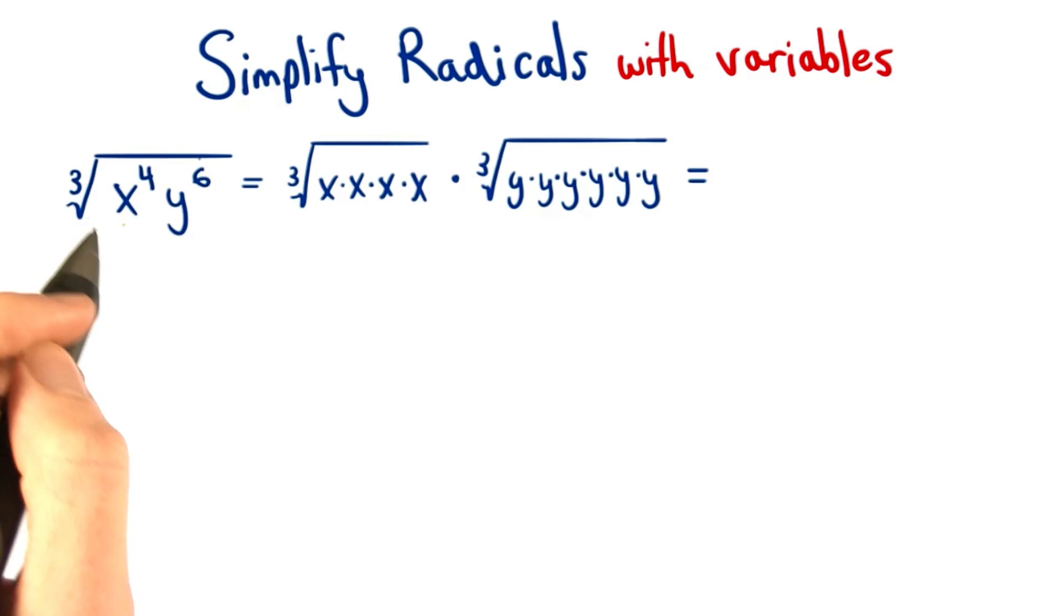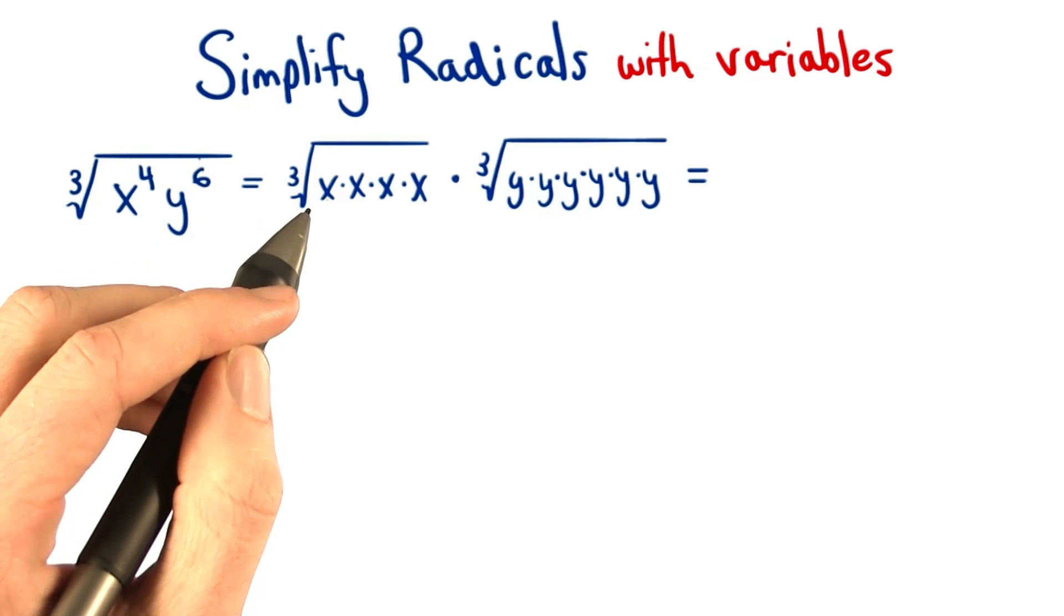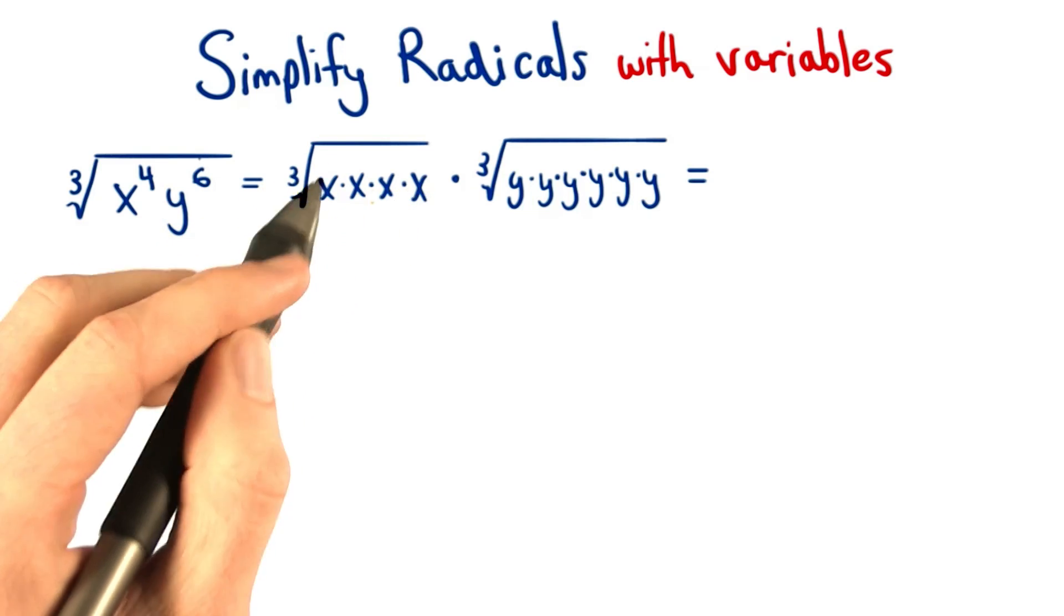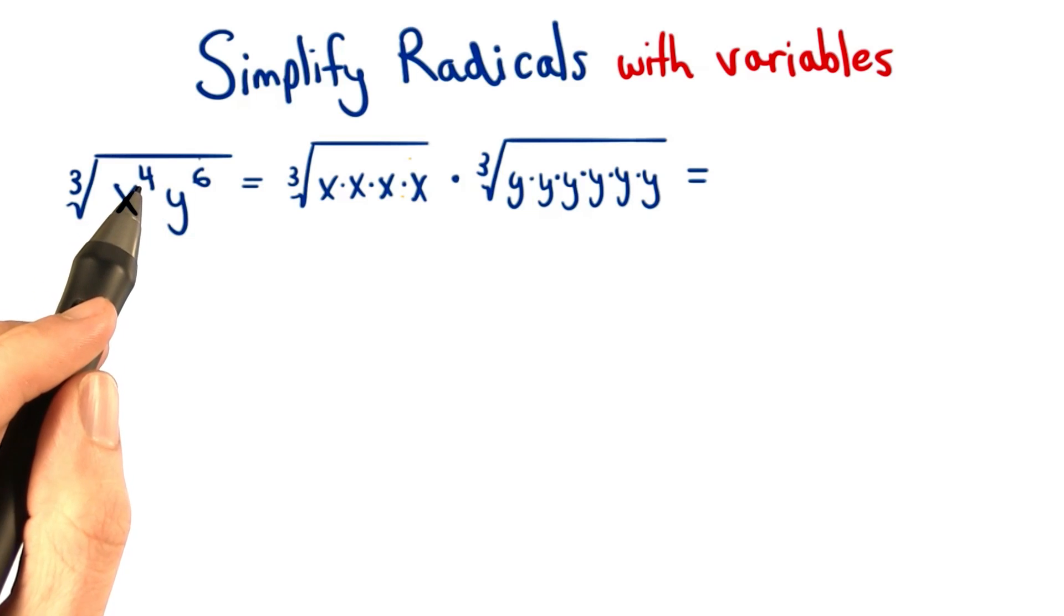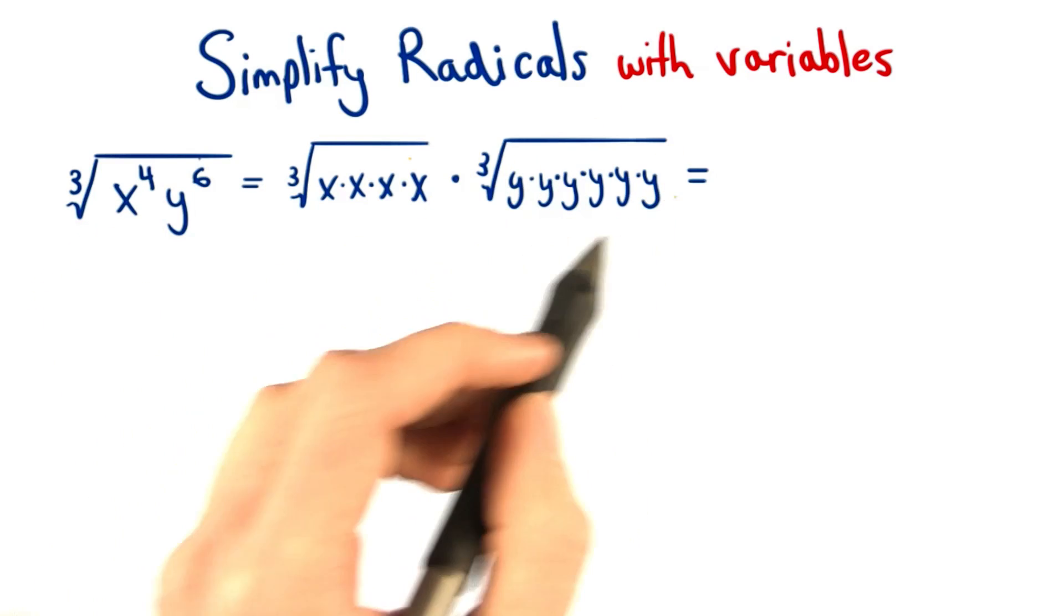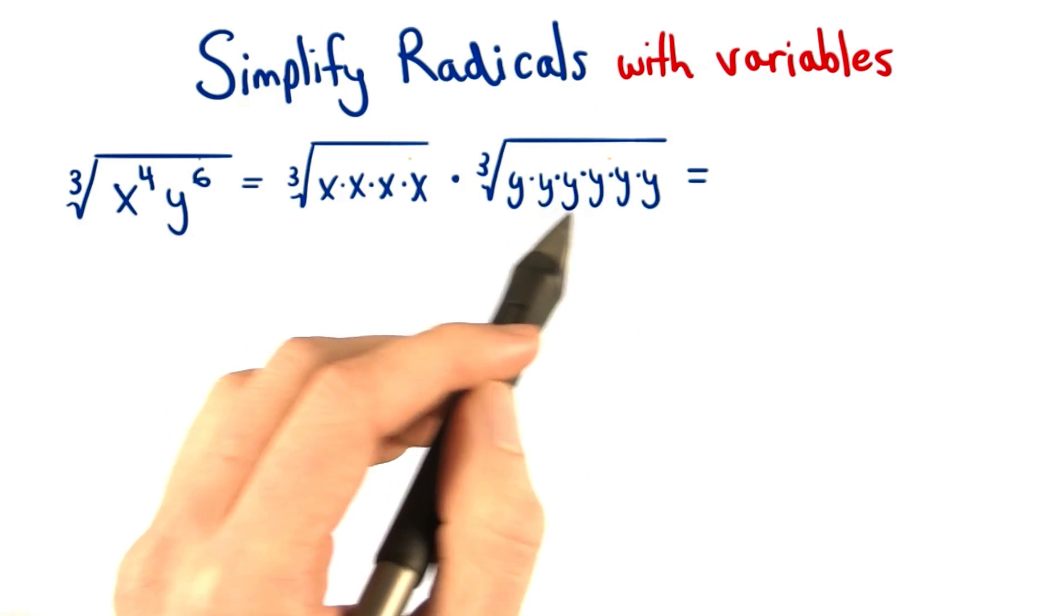For example, we can split this up into the cube root of x times x times x. These four x's are the same as x to the fourth. Similarly, our second radical will have the cube root of y to the sixth.